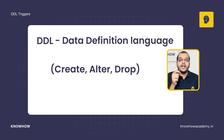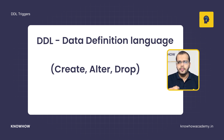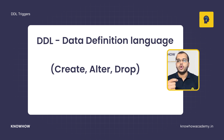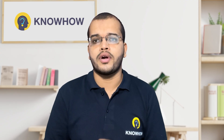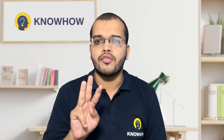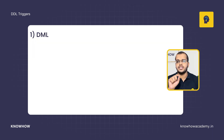These three are the events. Whenever we are trying to create a table, the trigger will be fired up. Whenever we are trying to alter a table, a trigger will be fired up. Whenever we are trying to drop a table, a trigger will be fired up. Now we have to understand that there are three different types of triggers: DML, DDL, and logon.